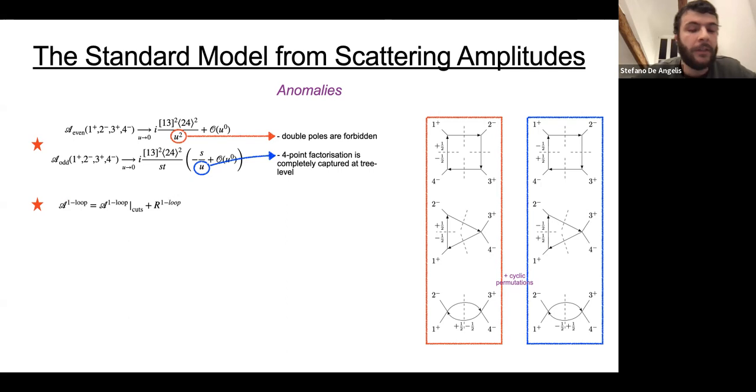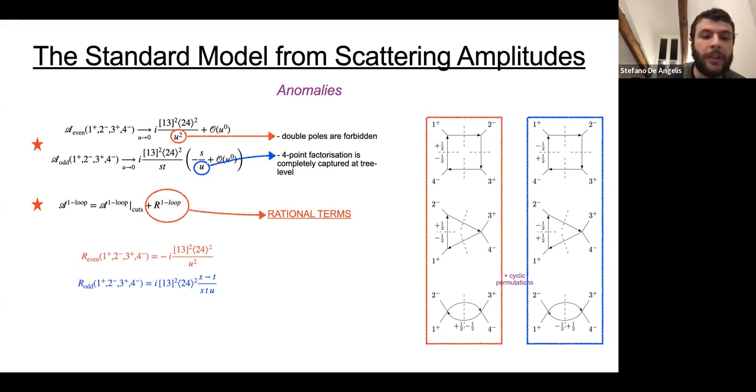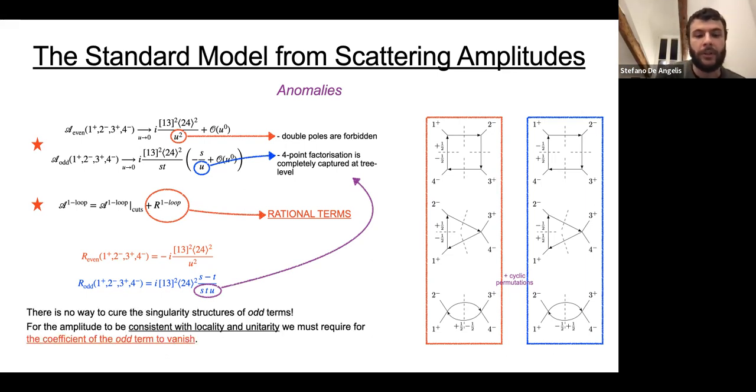We can consider both for the parity-even and parity-odd term the u goes to zero limit, and we find that both terms seem to have some problem. In particular, the parity-even develops some double pole in some factorization channel which is not allowed. The only thing we can do is to insert proper rational terms. For the parity-even term, this is completely fine, this cancels the double pole. But for the parity-odd term, if we want to cancel the additional u factorization channel, we insert corrections to the s and t channels, and this is inconsistent with three-level factorization. There is no way to cure the singularity structures of odd terms. For amplitude to be consistent with locality and unitarity, we must require the coefficient of the odd term to vanish.